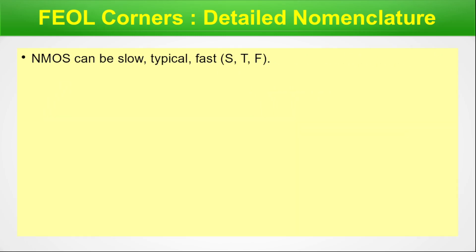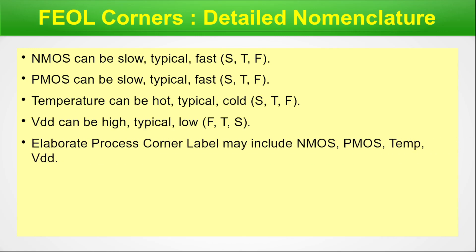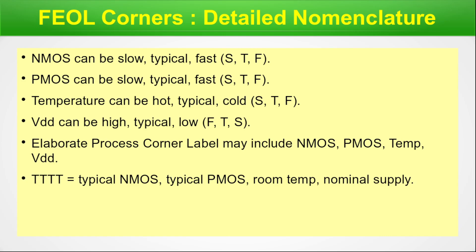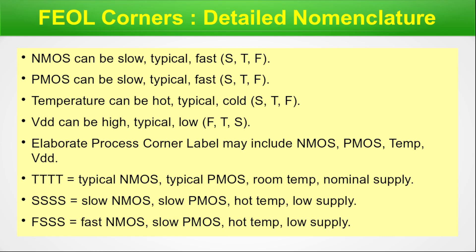There can be a more detailed FEOL corner nomenclature used in the VLSI industry. NMOS can be slow, typical, or fast — corresponding to S, T, and F. PMOS can be slow, typical, or fast — S, T, F. Temperature can be hot, typical, or cold — corresponding to S, T, and F respectively. VDD can be high, typical, or low — corresponding to F, T, and S respectively. Elaborate process corner labels may include NMOS, PMOS, temperature, and VDD all in the name. For example: TTTT means typical NMOS, typical PMOS, room temperature, nominal supply. SSSS means low NMOS, low PMOS, hot temperature, low supply. FSSS means fast NMOS, low PMOS, hot temperature, low supply. Using the mapping in these four parameters, you can construct many elaborate process corner labels.